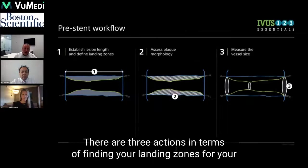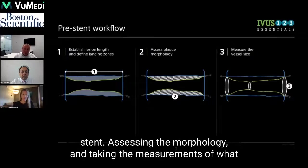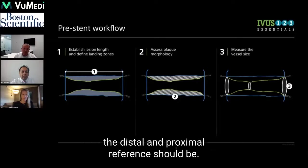There are three actions in terms of finding your landing zones for your stent: assessing the morphology, and taking the measurements of what the distal and proximal reference should be.